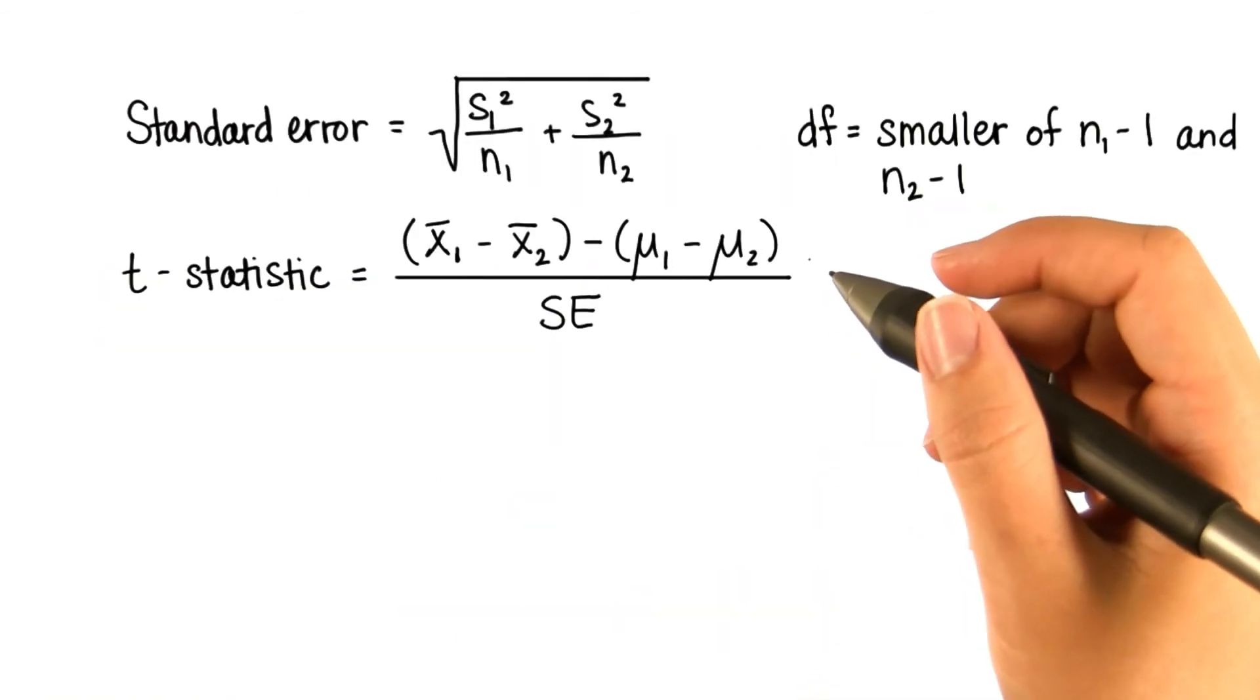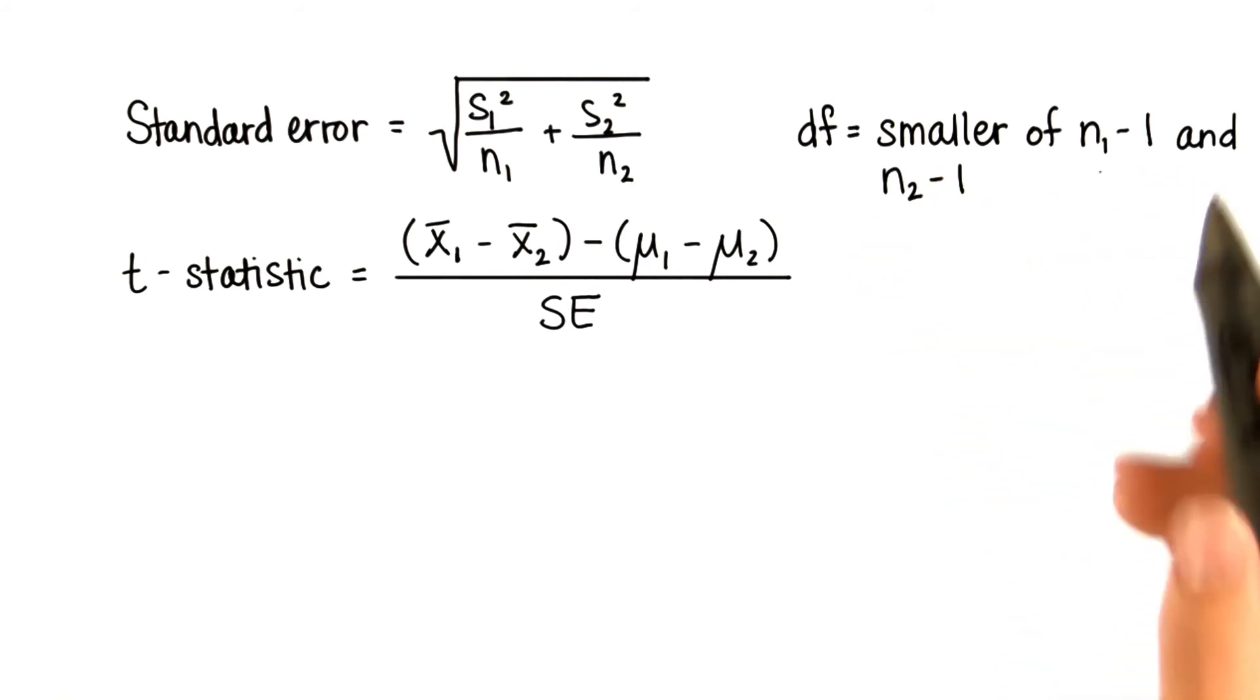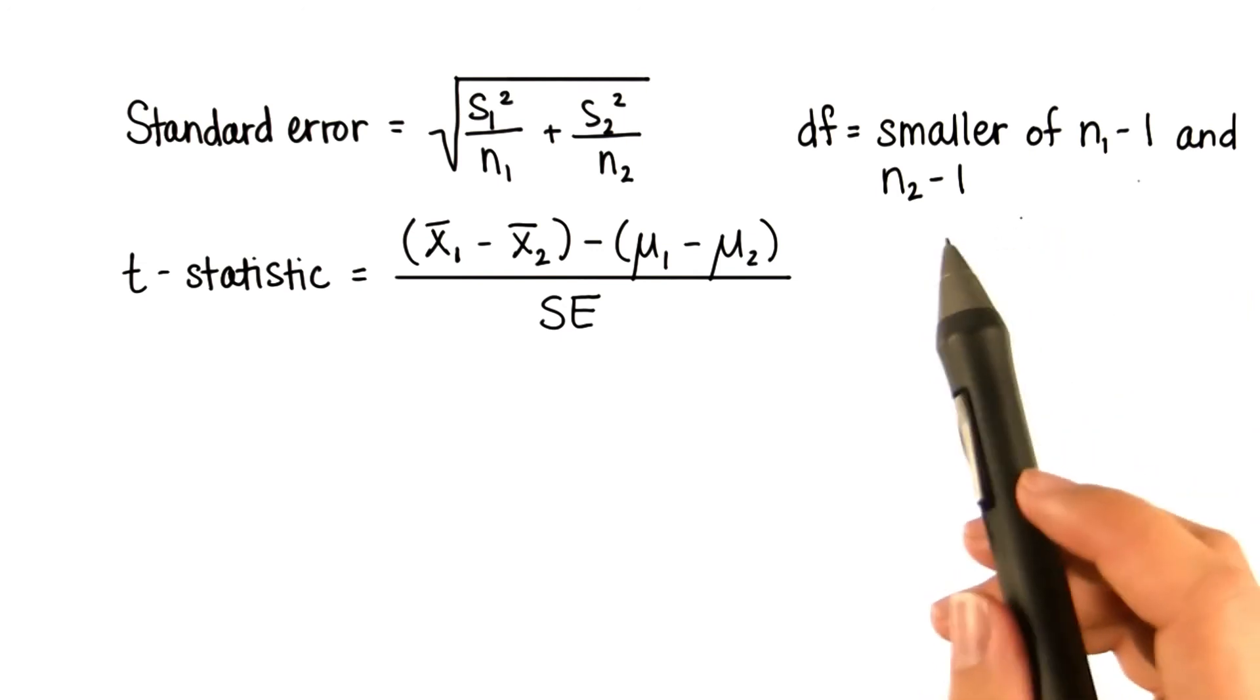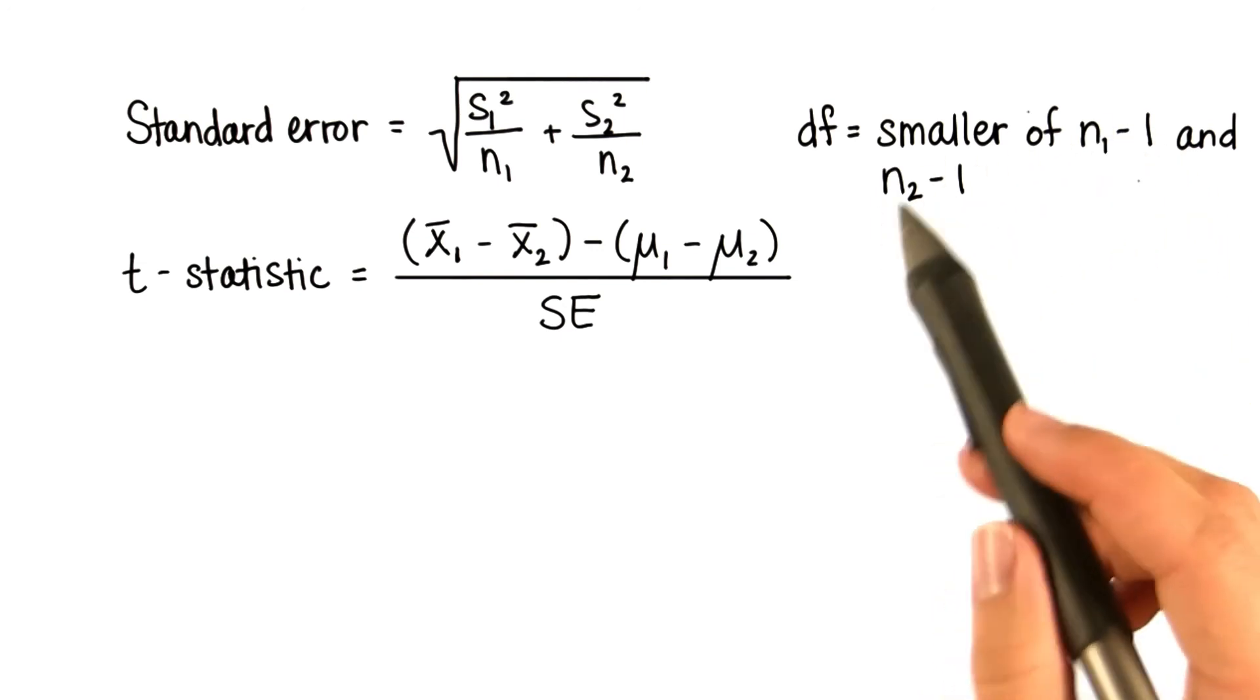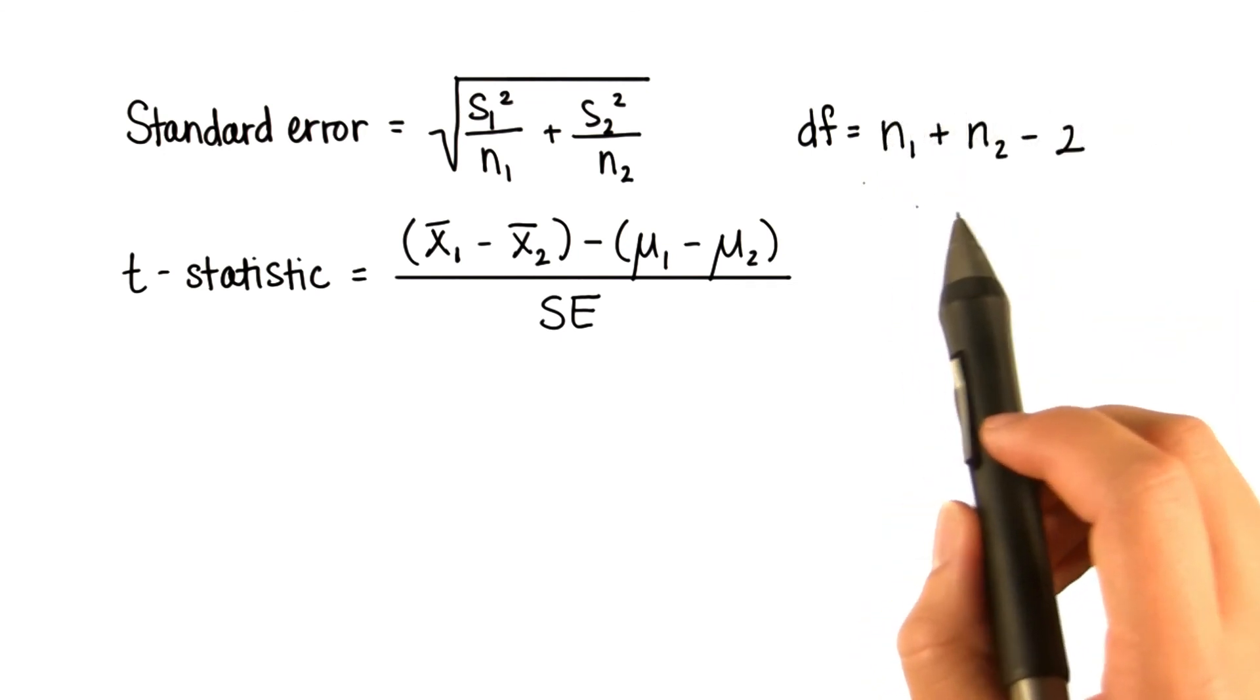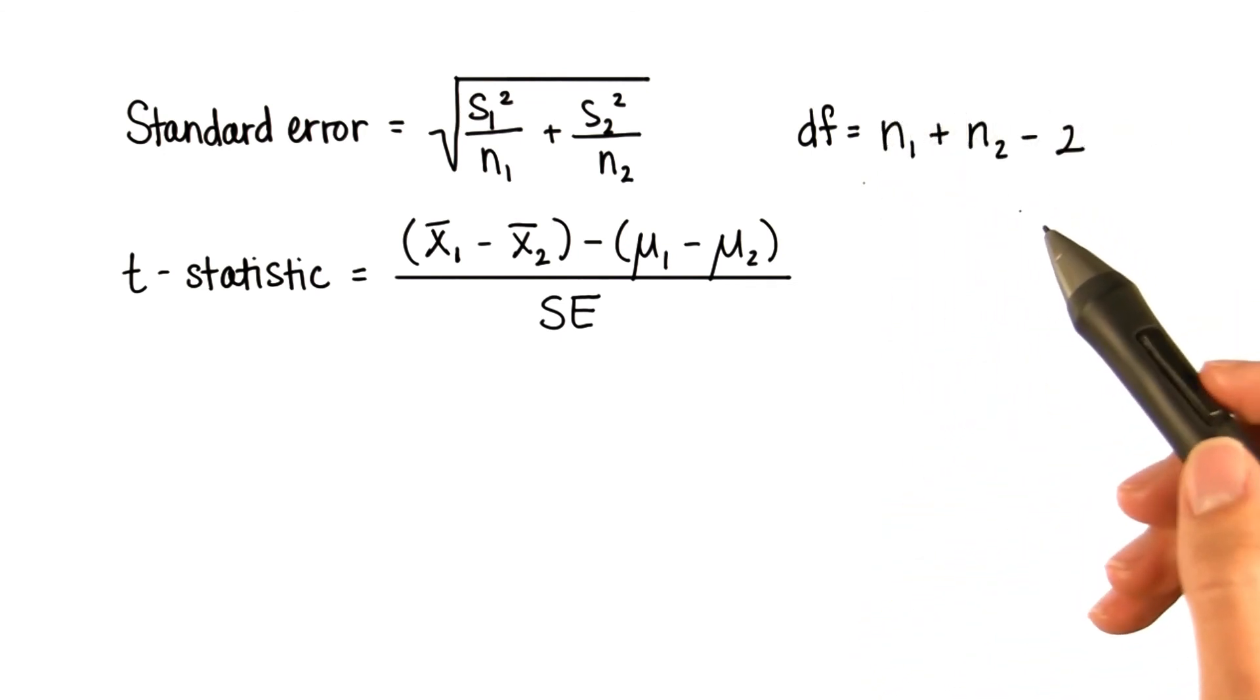A more conservative approach when we're not using software is to use the smaller of n1 minus 1, and n2 minus 1. In other words, the smaller of the two degrees of freedom from the two samples. But for now, we'll just use n1 plus n2 minus 2, because that's what you'll use later.